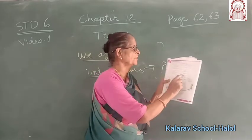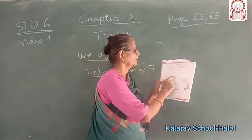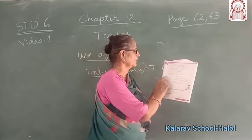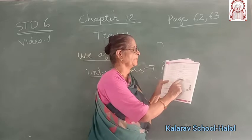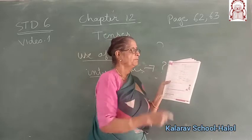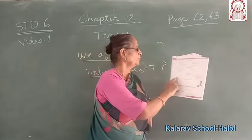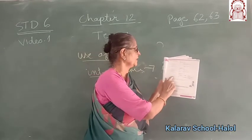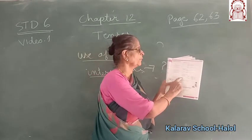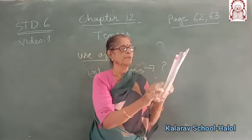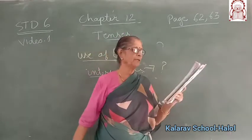Simple future tense: with 'I' and 'we,' we use 'will be' or 'shall be.' Example: 'I will be fine,' 'We will be punished.' With 'you,' 'he,' 'she,' 'it,' 'they,' and other subjects, we use 'will be.' Example: 'You will be invited,' 'They will be rewarded.' This is page 63.